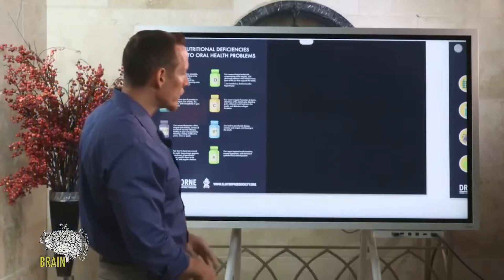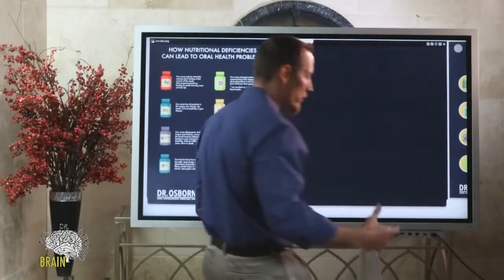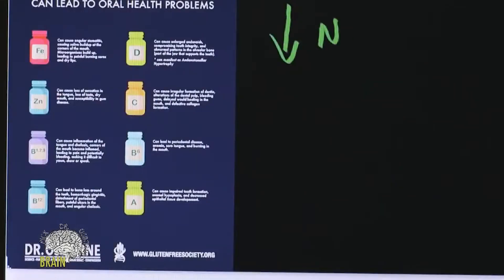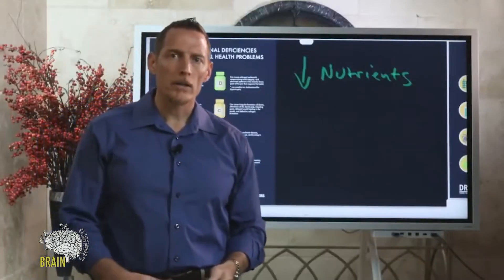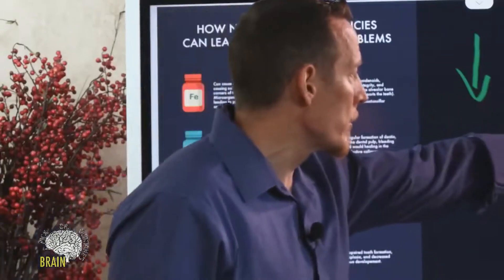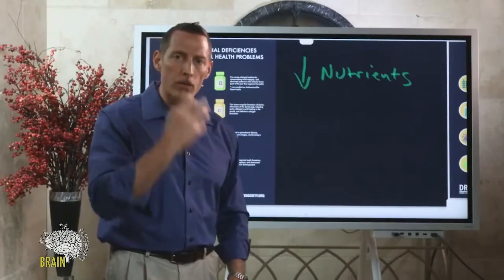One of the things we know gluten can do is contribute to poor digestion, which leads to malabsorption, which leads to a reduction in nutrients. When we have a reduction in nutrients, we get vitamin and mineral deficiencies. This can also impact the mouth, and this is actually one of the reasons why gluten sensitivity can affect the mouth — through bacterial changes, inflammatory changes, and lower levels of nutrient absorption.